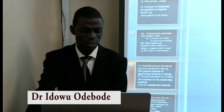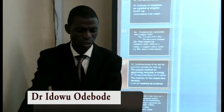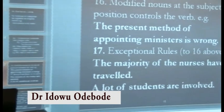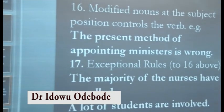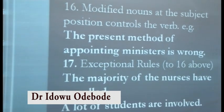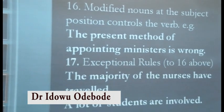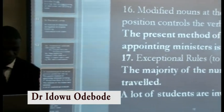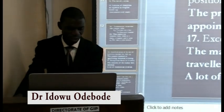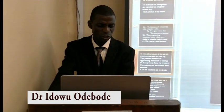Rule 16: Modified nouns at the subject position control the verb. For example: 'The solution of these problems is with you.' 'The present method of appointing ministers is wrong.' Notice that the italicized nouns — 'solution' and 'method' — control the verbs, not the plural nouns closer to the verbs. Therefore, we have singular subject plus singular verb in each sentence.